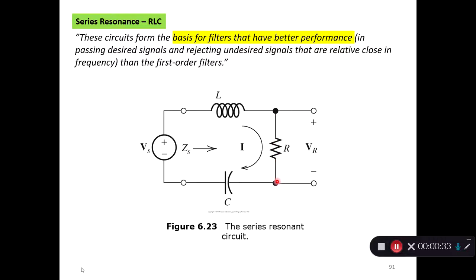We take the output of the circuit over the resistor. These circuits form the basis for filters that have better performance in passing desired signals and rejecting undesired signals that are relatively close in frequency than the first-order filter. In essence, these filters are more selective than first-order filters — they can narrow out a specific range of frequencies that the first-order filter can't do.